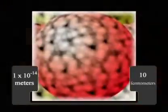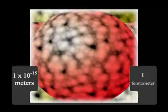Now we're going to go down to one femtometer, 10 to the minus 15 meters, and we zoom in on a single proton. So a proton is about 10 to the minus 15 meters in diameter.